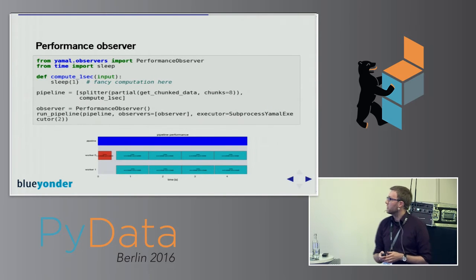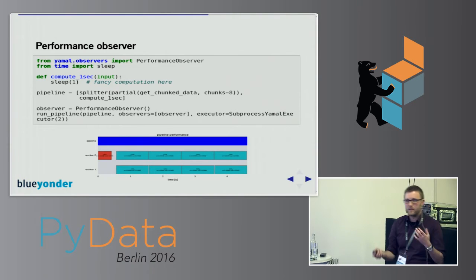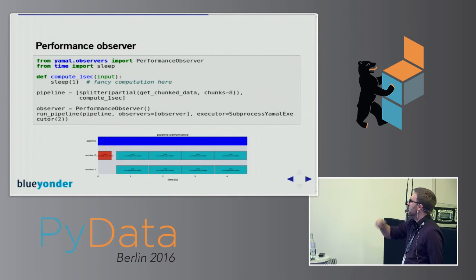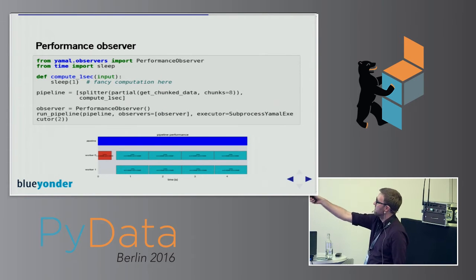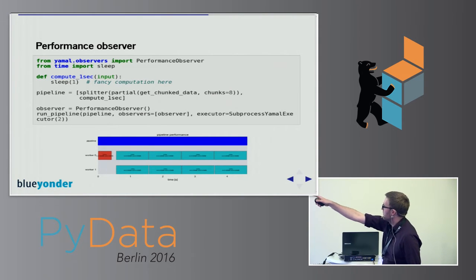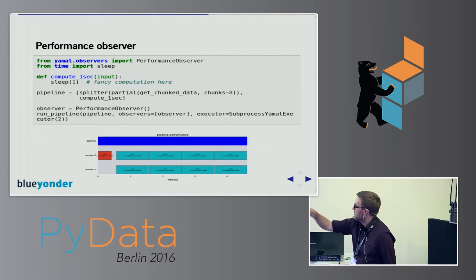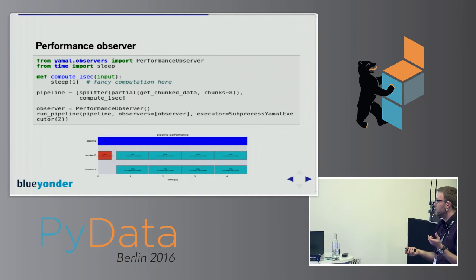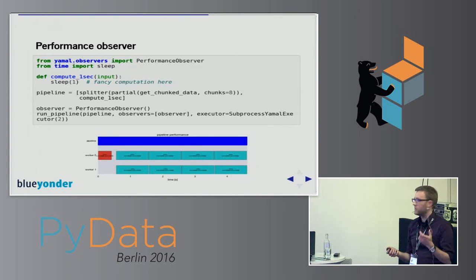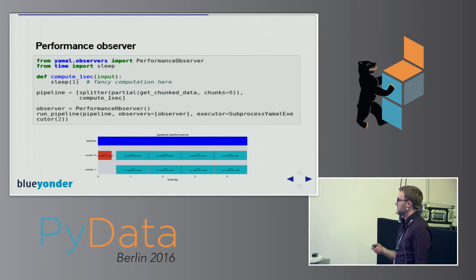Another very useful thing is the performance observer, which gathers timing information — very useful for investigating which functions take how much time and where you can optimize. In this example we have a splitter with eight chunks of data, and for each chunk a compute function that sleeps for one second. The dark blue row shows the execution time of the entire pipeline — a little more than four seconds. This run uses two workers, and after the splitter the different computations are nicely scheduled across both workers.